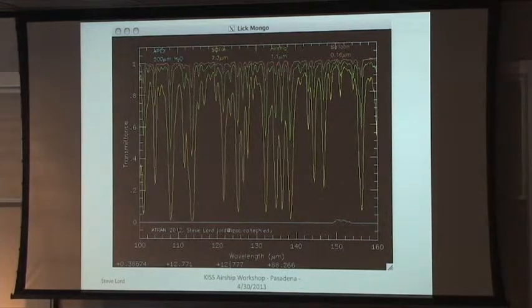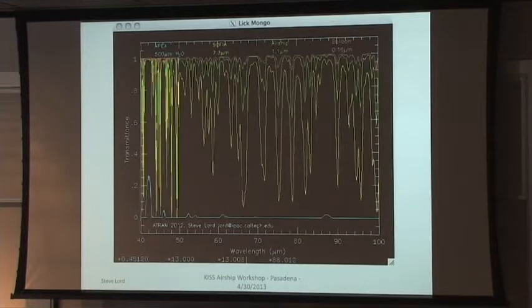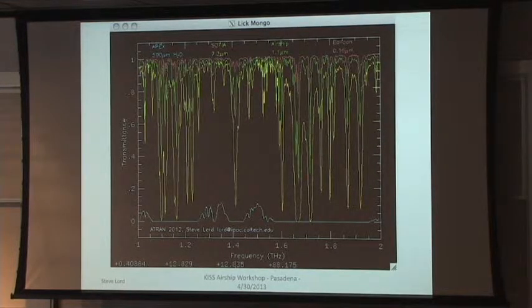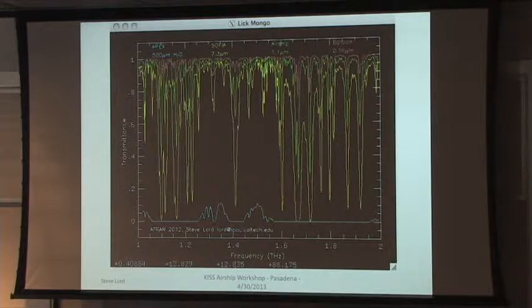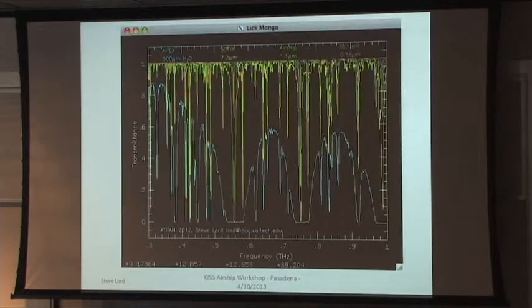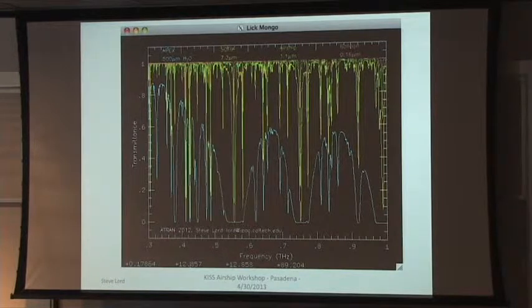We're almost to the submillimeter. I switched the scale to gigahertz at this point for convenience. So we're going from 150 to 300 microns, or 300 microns to a millimeter in transmission. This is the interesting part. Now you're getting to the ground-based submillimeter observatories. They fight this stuff. There's an oxygen line that's extremely important in here. But again, you're past most of this in space and in the high altitude.